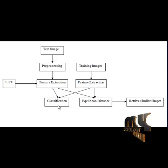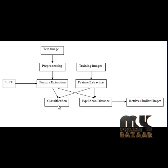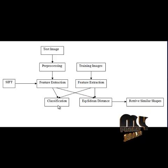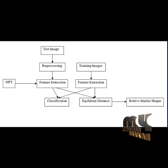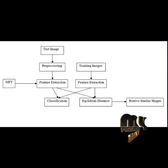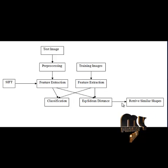The extracted features are then passed into the classifier. For classification, we use a Support Vector Machine. The SVM classifies the input shape into the corresponding shape category depending on the trained images. Then, using the equivalent distance measure, the objects having the minimum distance are extracted from the dataset, and the similar images are retrieved.